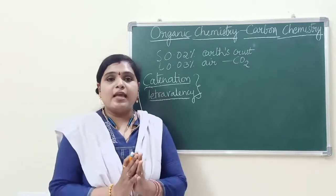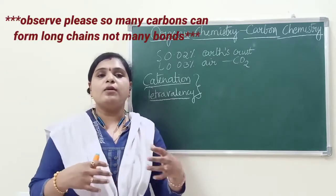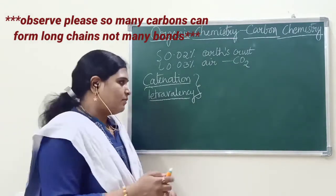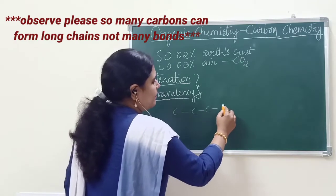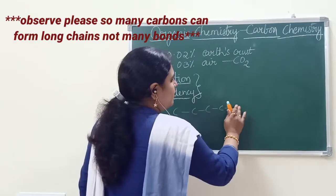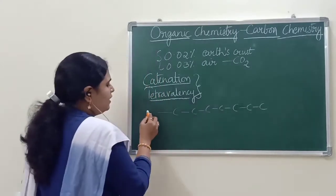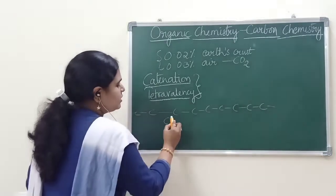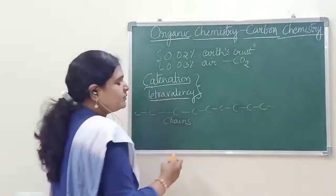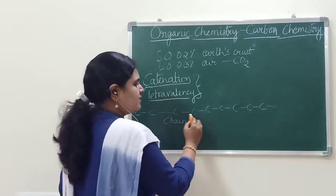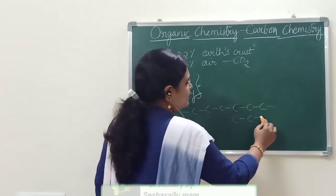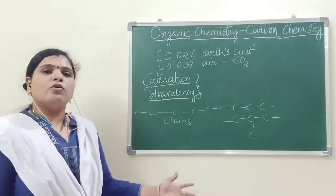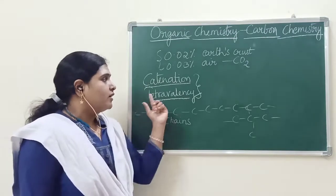Catenation is the ability of an atom to form so many bonds with others. For example, carbon can form any number of carbons. It can bond with any number of carbons to form chains. They may be straight chains or they may be branched chains also. So much possibility is there in case of carbon.